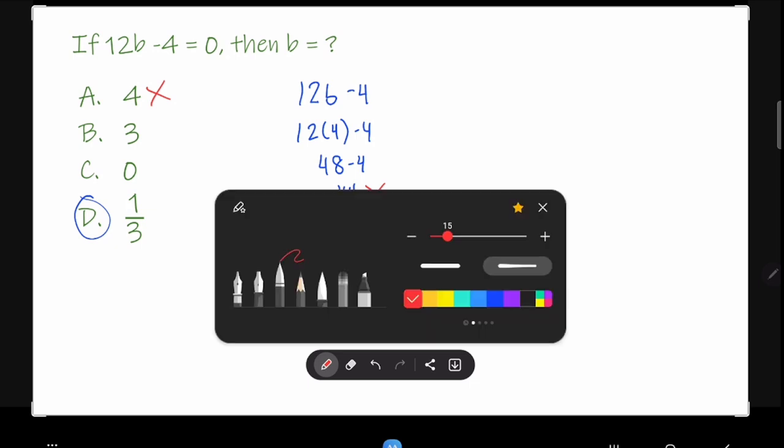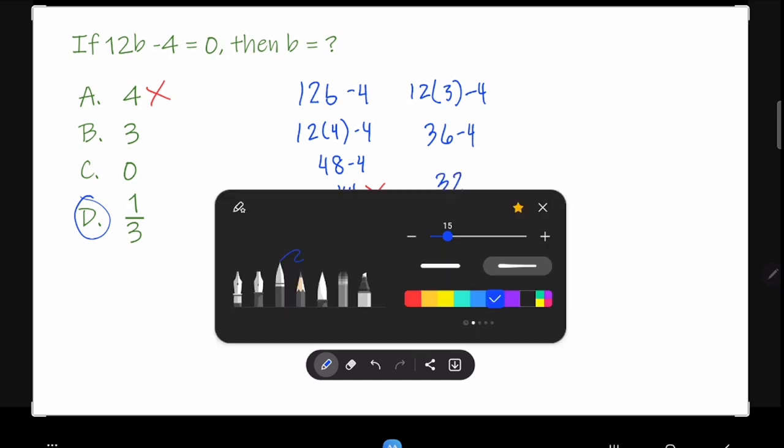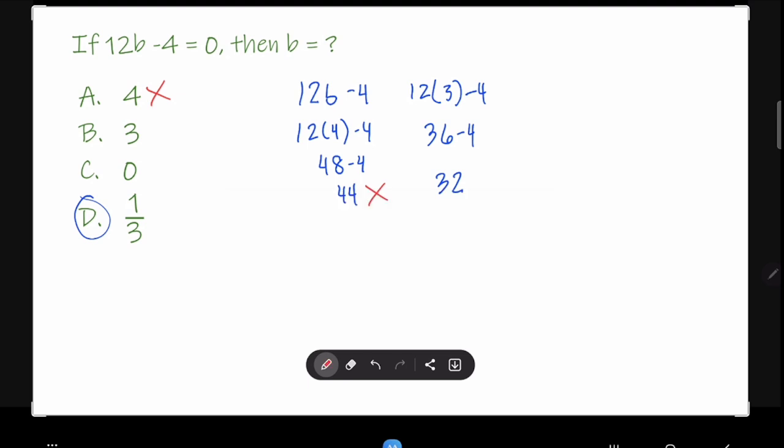Then we're going to try the second one, which is 12 times 3 minus 4. So 12 times 3 is 36, then 36 minus 4 is 32, which is not equal to 0, so this is not part of the answer.